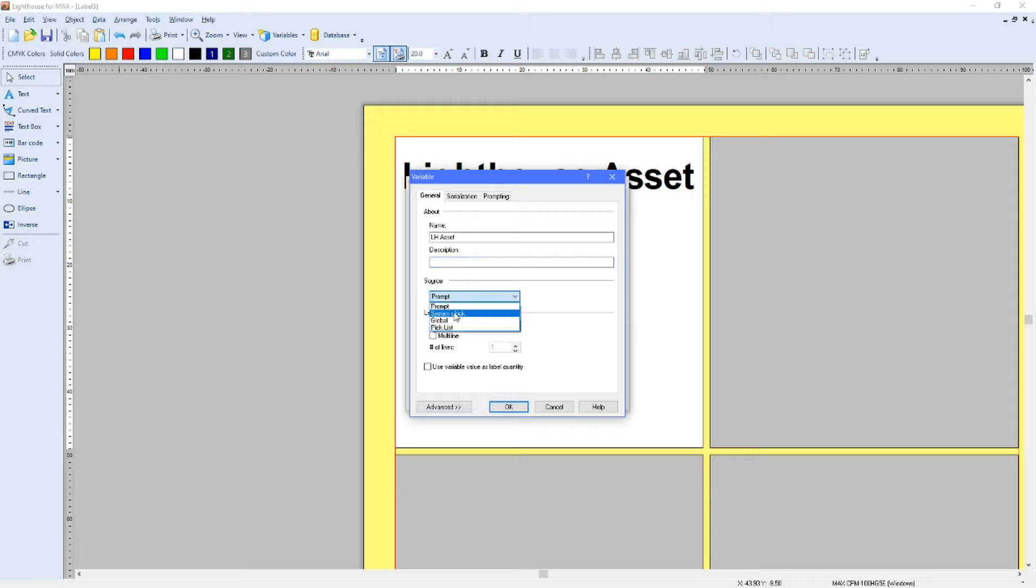The description, you don't have to worry about. That is purely for your reference if you have quite a few going on in the label. I'm just going to leave that blank for now. Prompts, again, here from the source. That will just automatically default to prompts, which means when we go to print the labels, it's going to prompt us to do something basically, and we want to leave it as that for now. Maximum length. I'm just going to keep this to five for now. Again, you can change that to whatever you like, provided it stays inside the label.